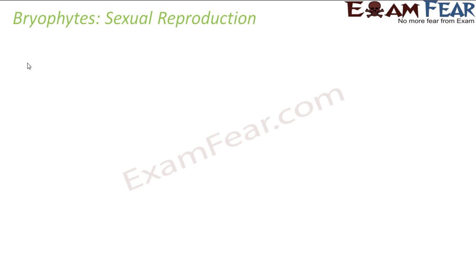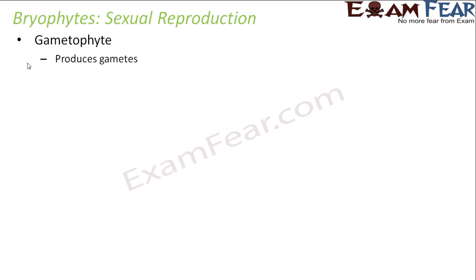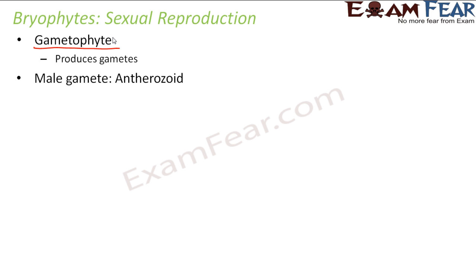Now let us look at the important aspect — sexual reproduction — and how it takes place in bryophytes. As mentioned before, in bryophytes we have neither flowers nor seeds. So from where are the gametes produced? For sexual reproduction we need the sex cells, that is the gametes. The structure which produces gametes is known as gametophyte — 'gameto' relates to gametes and 'phyte' means plant. The plants which produce gametes are known as gametophyte. The male gamete is known as antherozoid and the female gamete is known as the egg.